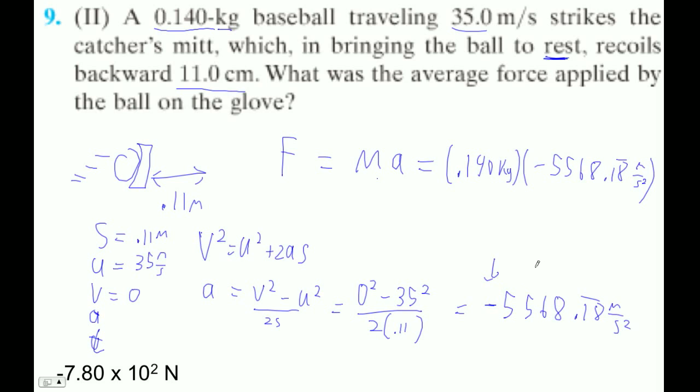So times 0.14. That's 779.54 repeating newtons. So this is negative 7.80 times 10 to the 2.